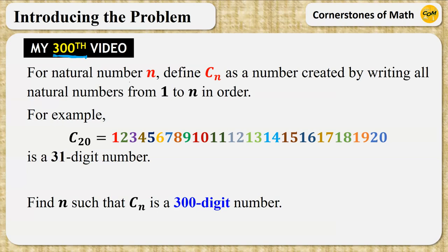For natural number n, define Cn as a number created by writing all natural numbers from 1 to n in order. For example,